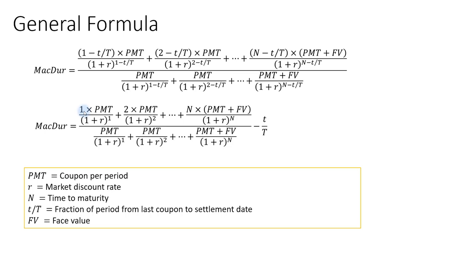We have periods 1, 2, up to N from the previous coupon period. We multiply by the coupon PMT, or PMT plus the face value if it's at maturity. Then we discount them using the market discount rate for each respective period, divide the whole thing by the full price of the bond, and then subtract the fractional period.